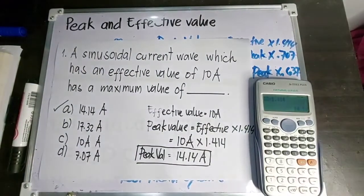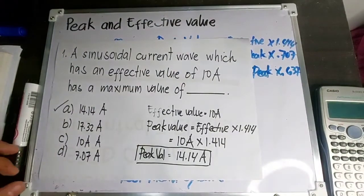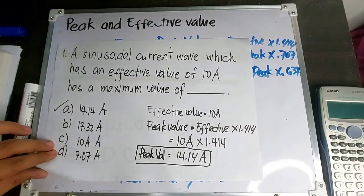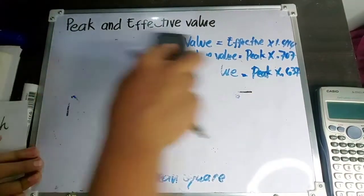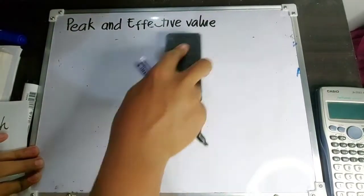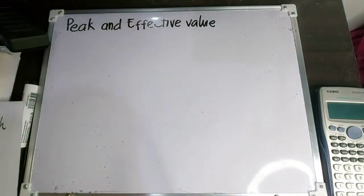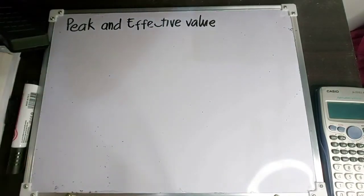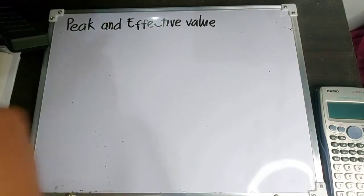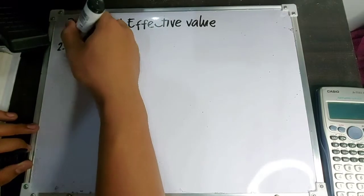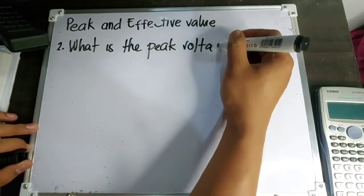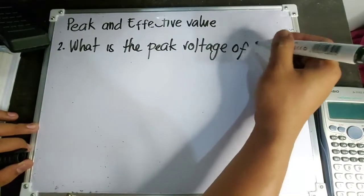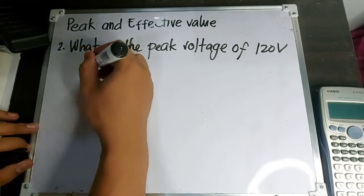Sa choices, siya ay letter A. Ganyan lang kasimple, guys, yung pag-solve ng peak and effective value. O kung kasama yung average value, meron namang formula. Mag-sample pa tayo ng isa pang problem. Number 2 problem: What is the peak voltage of 120 volt effective circuit?